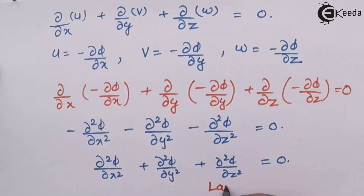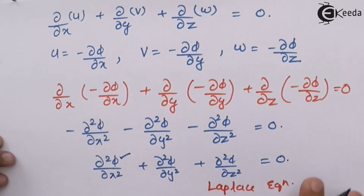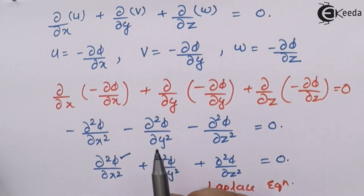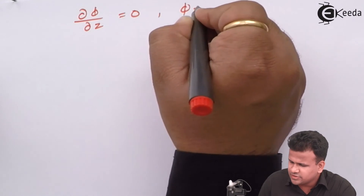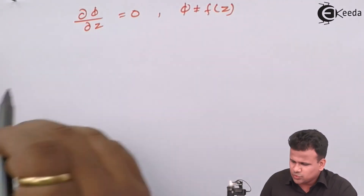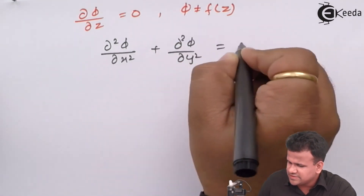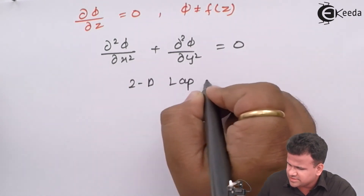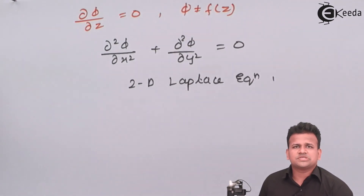This equation is called the Laplace equation. The Laplace equation is in the form of double differentiation of phi with respect to x, y, and z. We can write this Laplace equation in two dimensions by considering the change in phi with respect to z equals zero, meaning phi is not a function of z. So what we get is: dou square phi by dou x square plus dou square phi by dou y square equals zero. This is the two-dimensional Laplace equation in terms of the velocity potential function.